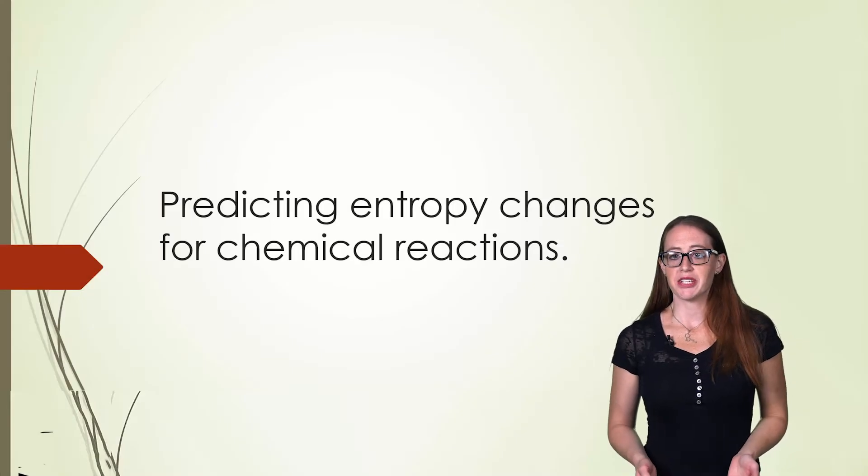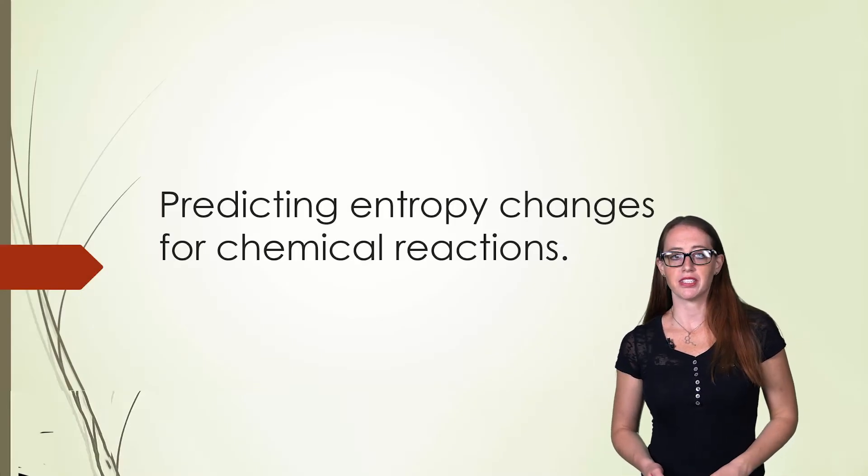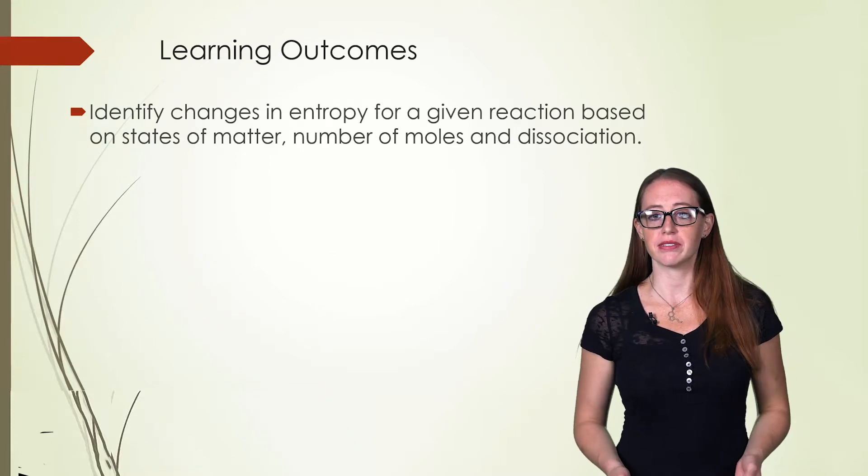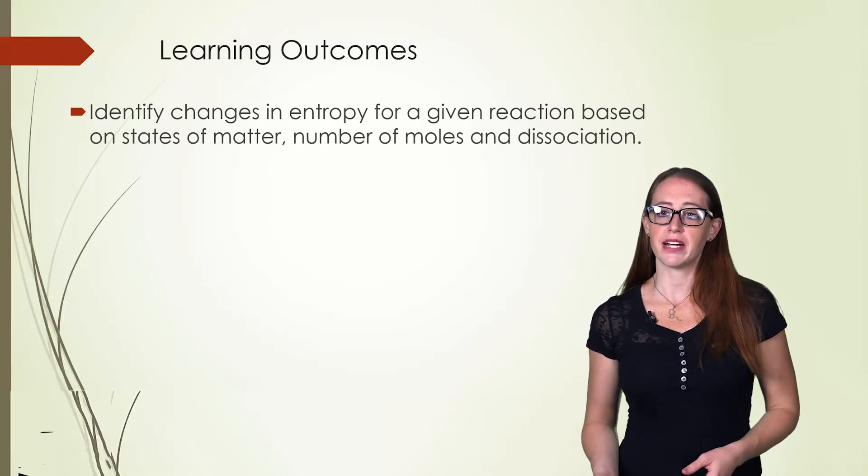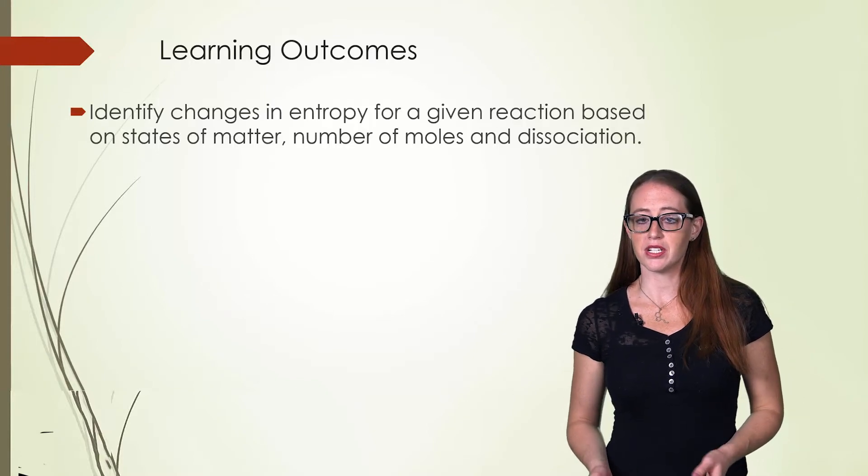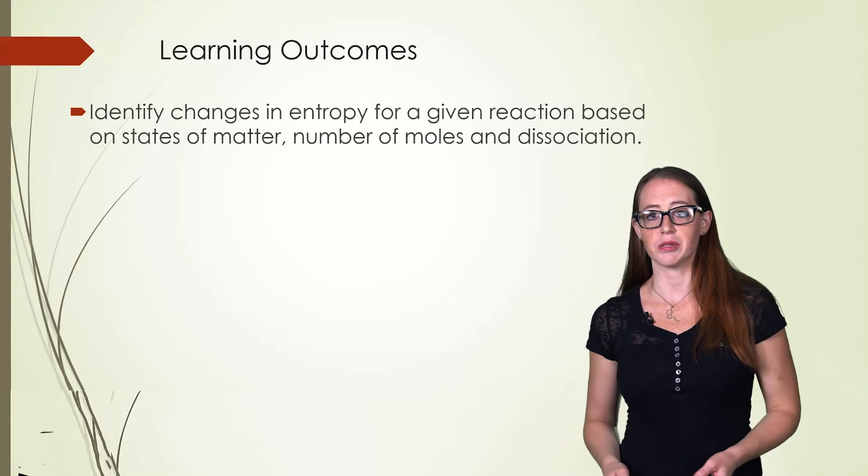Now let's talk about how we can predict entropy changes for a given chemical reaction. In this video we will identify changes in entropy for a given reaction based on the states of matter involved, the number of moles of a species, and the dissociation of a species. We will also define standard state entropy.